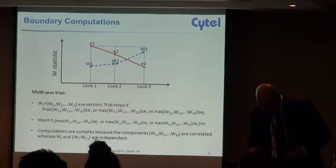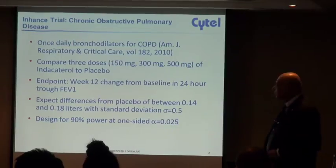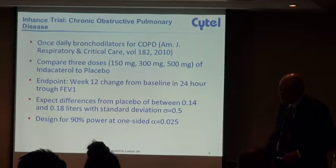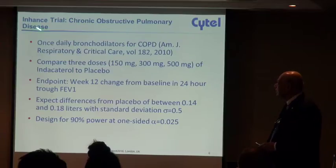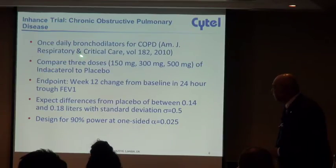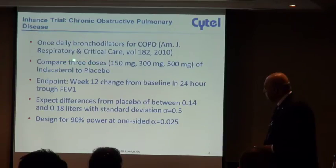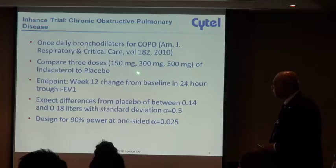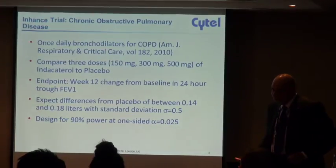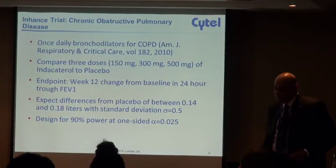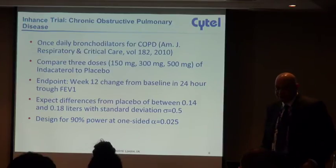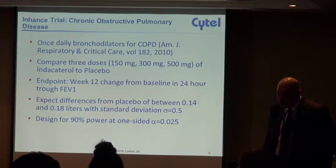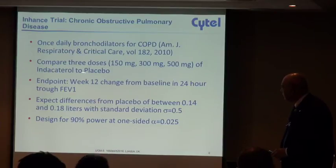You have a sort of a multivariate normal integration with independent increments across stages and that makes the thing fairly complicated. I'm going to illustrate this implementation in East with the ENHANCE trial, which actually has been published by statisticians from Novartis. Frank Bretz is one of the co-authors and they used the combination testing and closed testing approach.